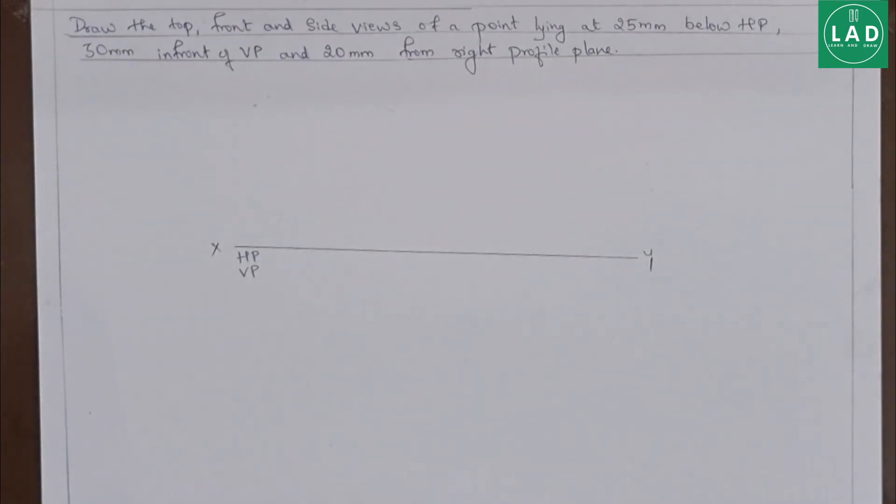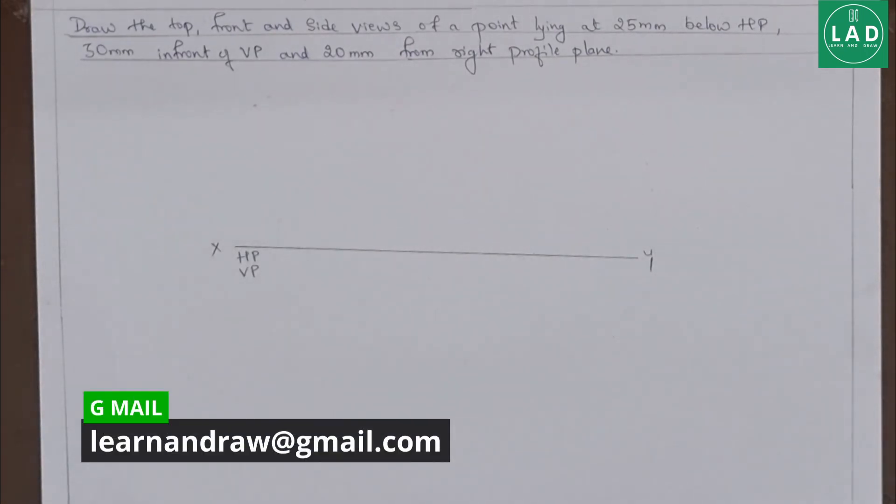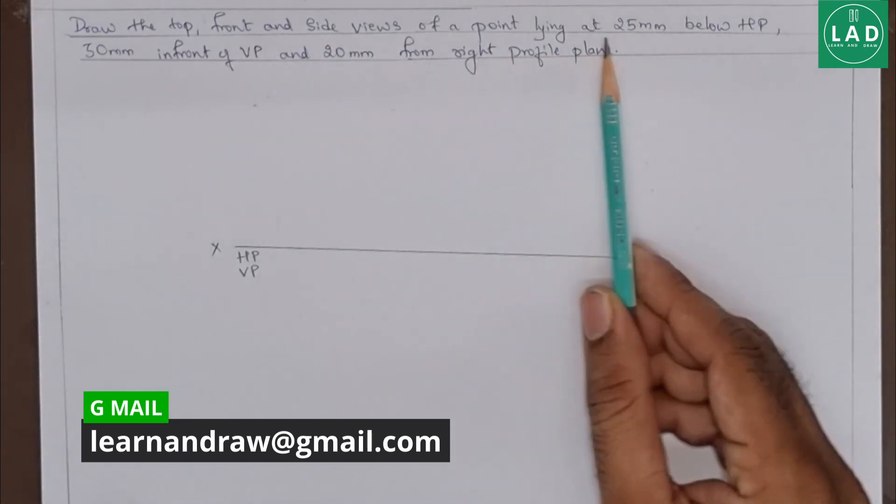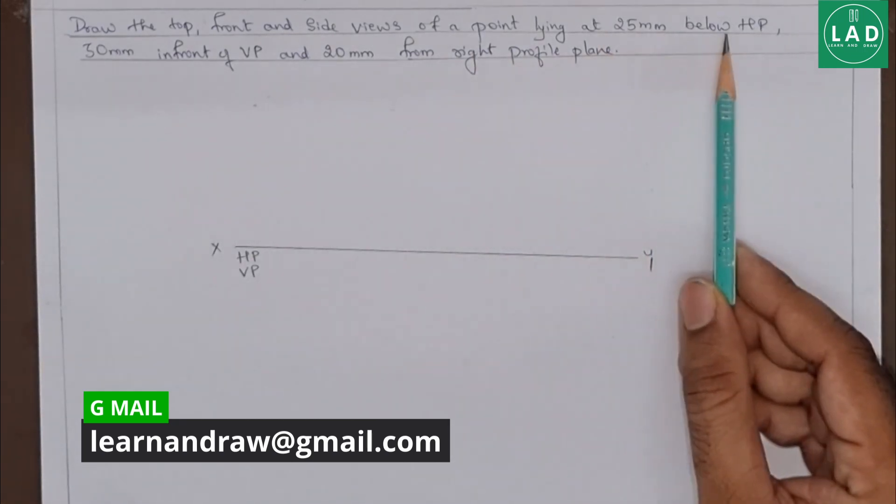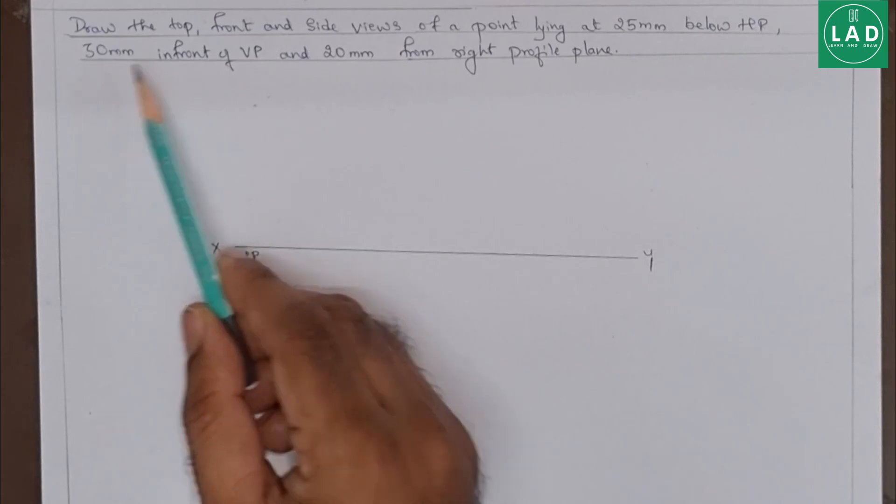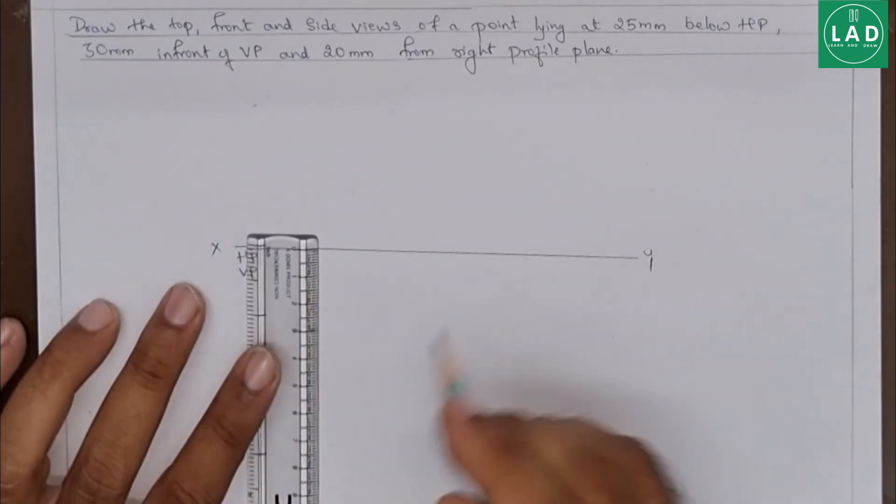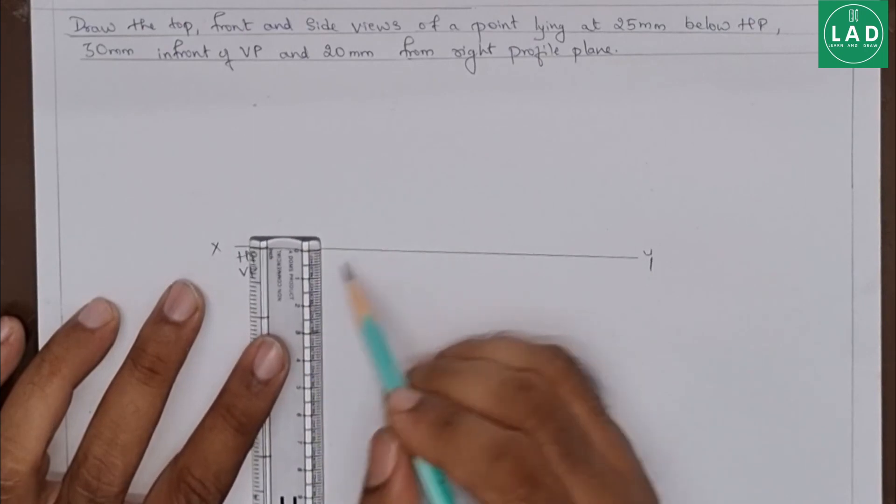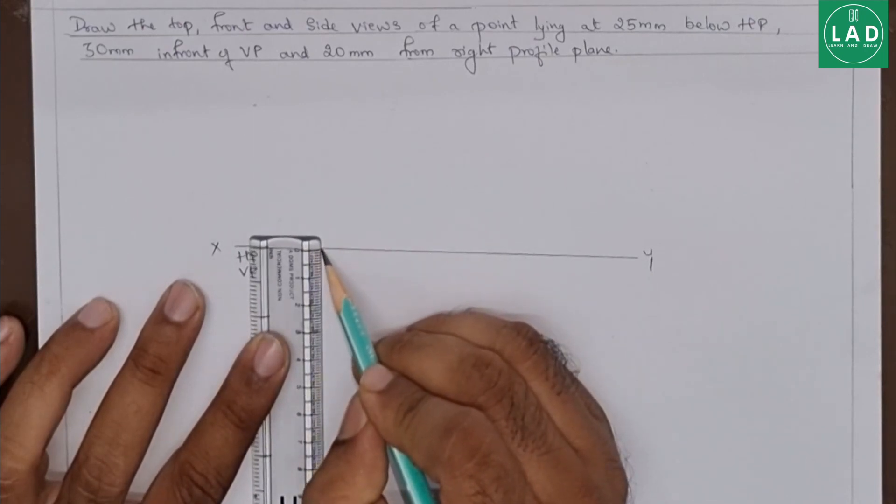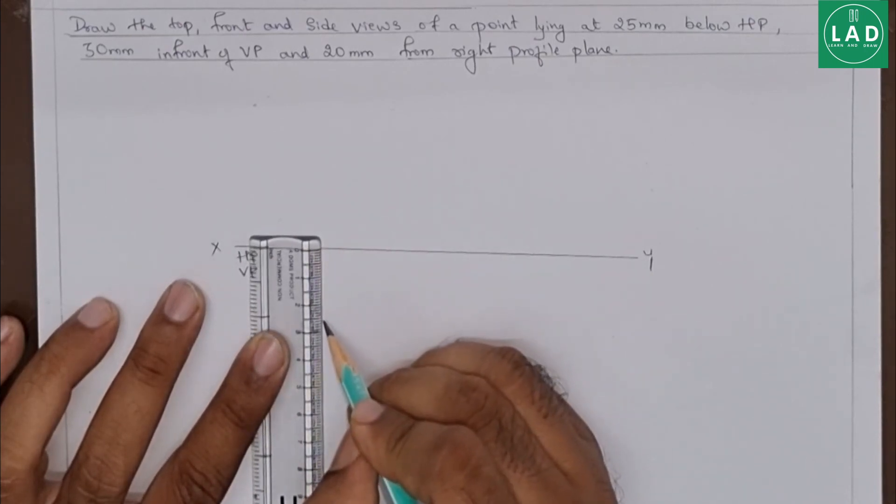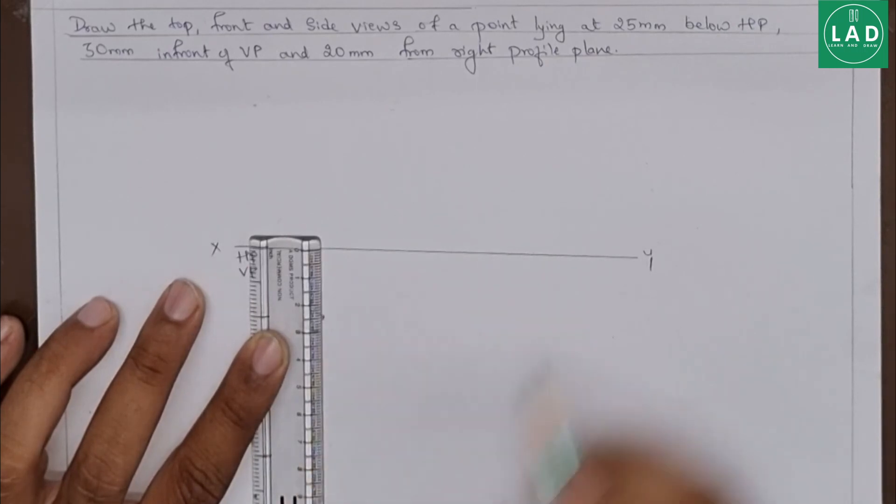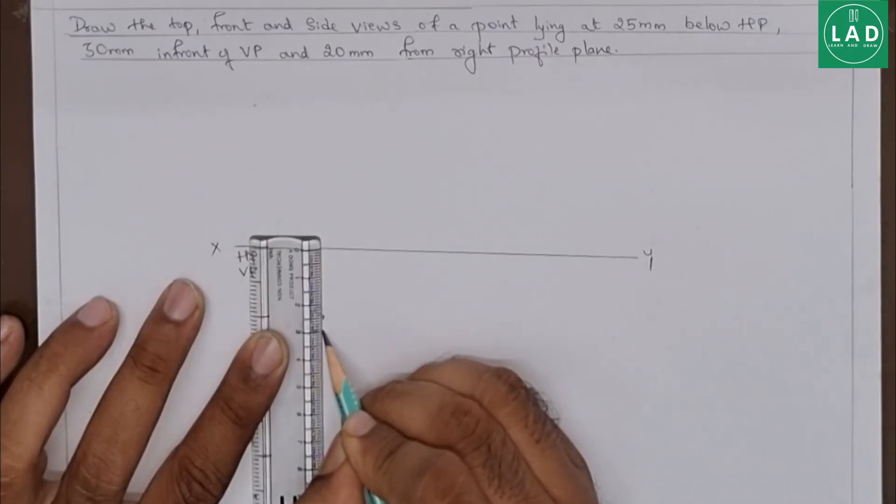Next, let's see the question. The point is lying 25 mm below HP and 30 mm in front of VP. That is, both the points are below the XY line. Let's mark one point at a distance of 25 mm and another point at a distance of 30 mm.